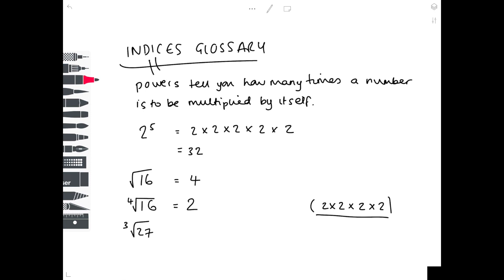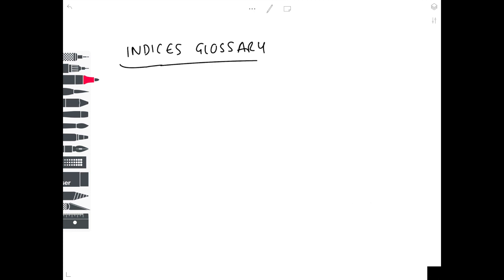Now let's look at a cube root — the cube root of 27. Which number needs multiplying by itself 3 times to get to 27? If we do 3×3=9, ×3=27, so the cube root of 27 is 3.